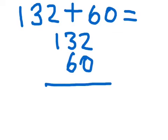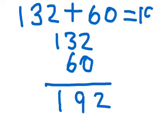2 and 0 is 2, 6 and 3 is 9, add 1, it's 492. There's your answer.